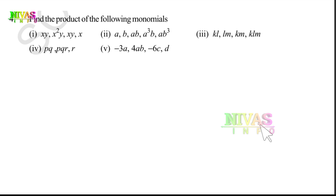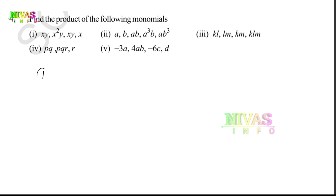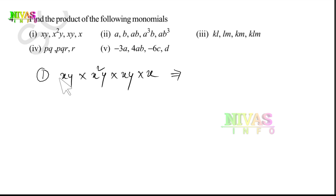We have the fourth question with five problems: Find the product of the following monomials. First one: X·Y into X²Y into X·Y into X. Counting X terms: 1, 2, 3, 4 — plus one more gives X to the power of 5. Y appears three times giving Y³. So the answer is X⁵Y³.